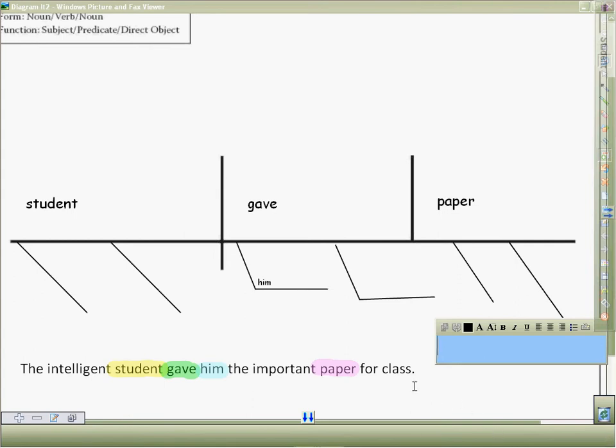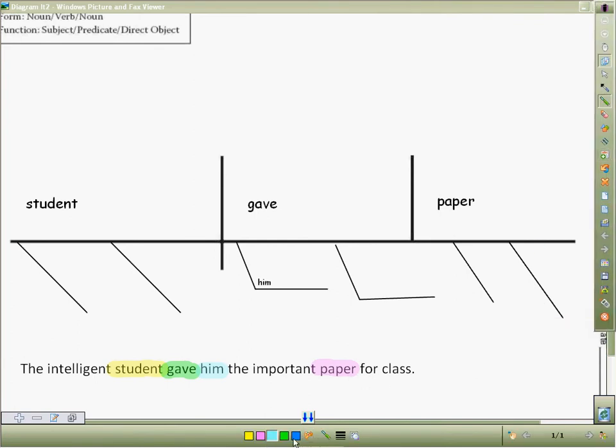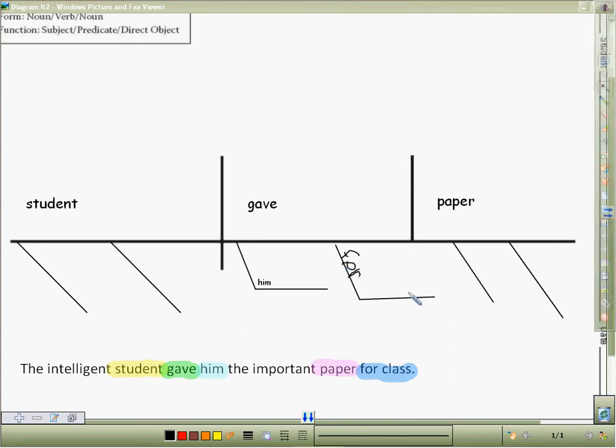Then we have a couple of different questions. The next question that we would ask is how, when, or where did he do it? The answer for that is for class. For class is a prepositional phrase. It goes underneath the verb. It's an adverbial prepositional phrase. So we need to put for on the line going down, and then class on the line going across.